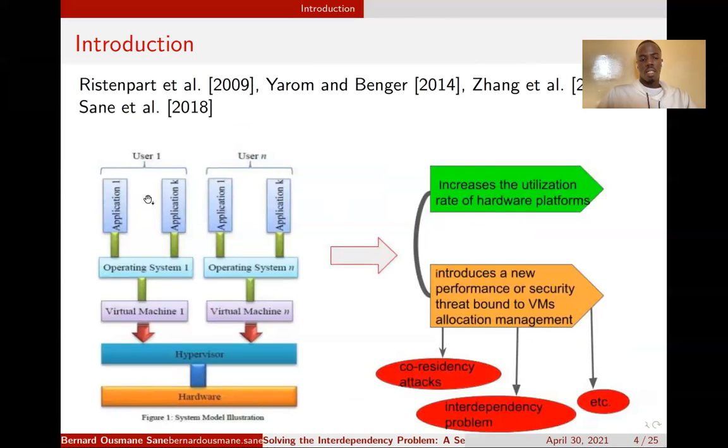As I said earlier, here you can see we have different users, user 1 through user n, and they share the same provider. They can come from one or multiple virtual machines. Therefore, this situation increases the utilization rate of hardware but also introduces some threats bound to co-location, such as co-residency attacks and side-channel attacks.